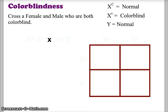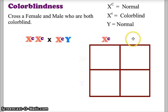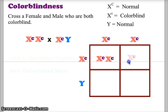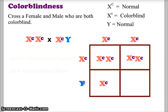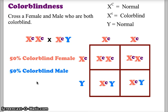Let's do one more example: crossing a colorblind female (X^c X^c) with a colorblind male (X^c Y). When we segregate the alleles, the mother can only give X^c, and the father can only give X^c or Y. All offspring will be colorblind: the female offspring receive X^c X^c (colorblind females), and the male offspring receive X^c Y (colorblind males), since the Y does not carry a trait for colorblindness. Results: 50% colorblind females, 50% colorblind males.